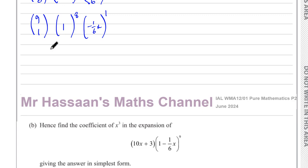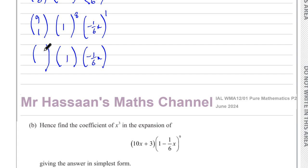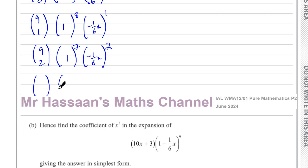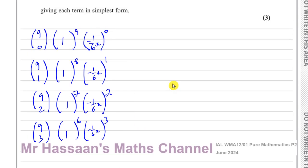For the third term I have minus one-sixth x, 1, and 9. The power of x increases to 2, and the other power decreases to 7 so they add to 9. I put 7 in the nCr position. That's the third term. For the fourth term, the power of x becomes 3, the other power becomes 6, and I put 3 in the nCr. Now I can work out the value of each term.